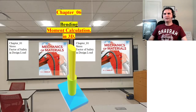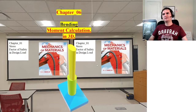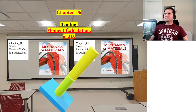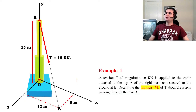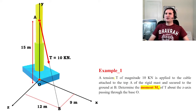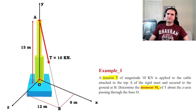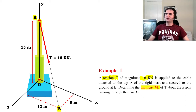Chapter 6: bending — an example in moment calculation in 3D space. In this problem, we have a tensile force T with magnitude of 10 kilonewtons which applies at the top of a rigid mast. The cable is connected from A to B, and the tensile force is equal to 10 kilonewtons, which applies at A towards B.